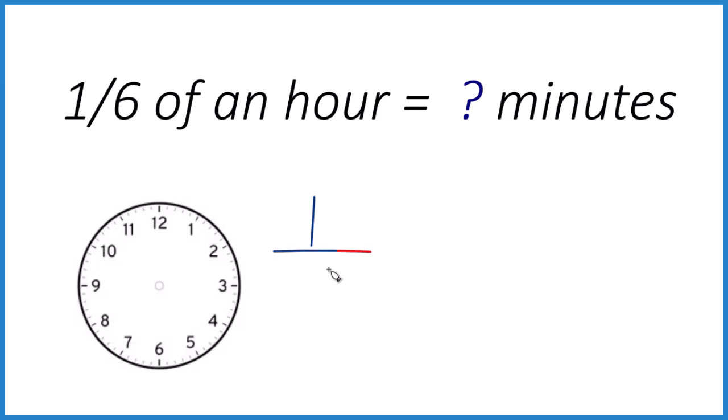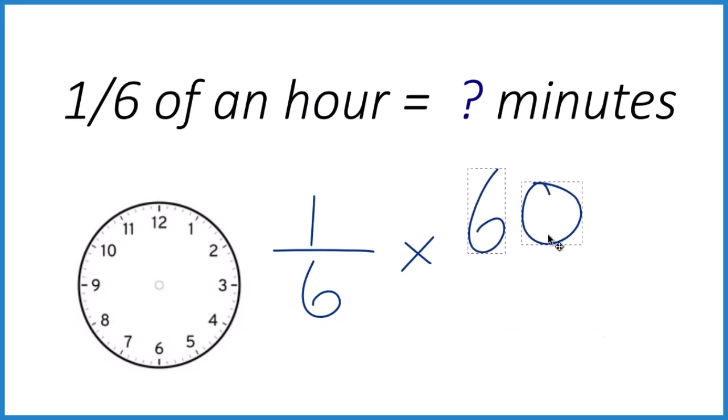So we take one-sixth and of, that means multiplication, and 60 minutes. But let's do this. Let's take the 60 and move it up here, and then call it 60 over 1. It's still 60, we're just dividing by 1, but now it's easy to multiply.